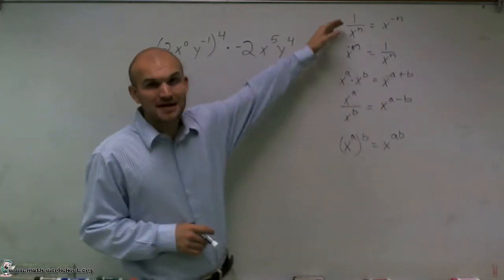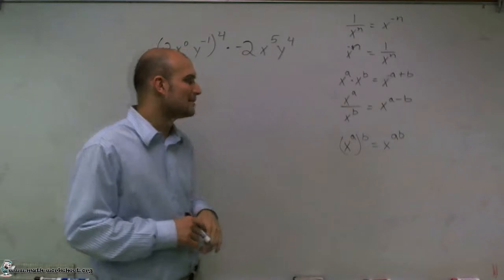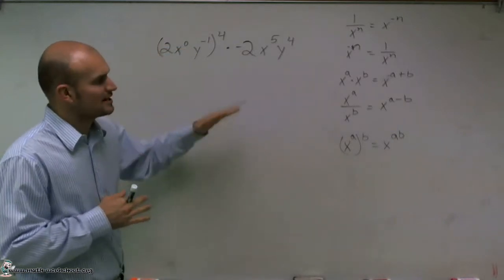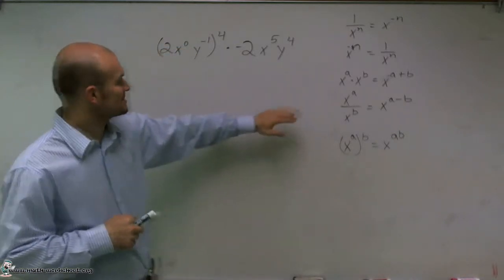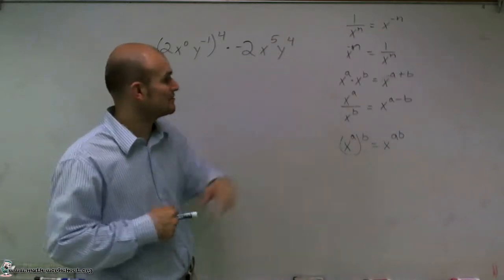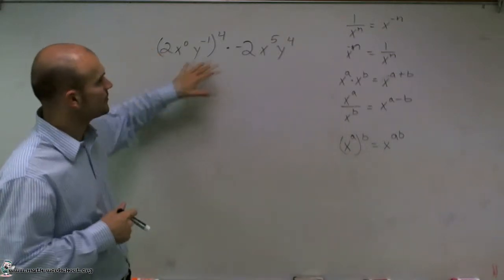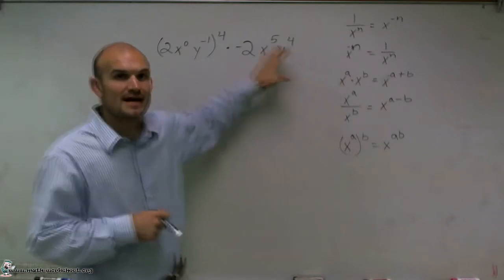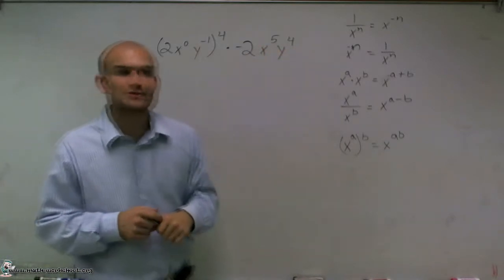So I wrote down the rules of exponents that I'm going to use in this problem. I'm going to try to touch base on almost all of them, except for the division. This one doesn't have any division in here. But I want to go through each one of these rules as I'm explaining how I'm going to use them to simplify it.